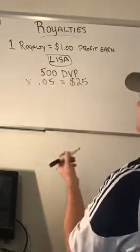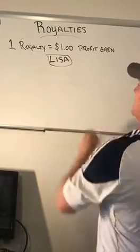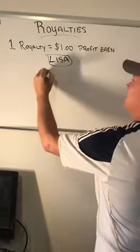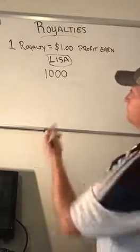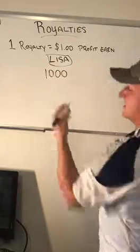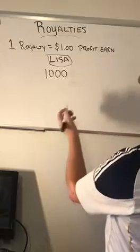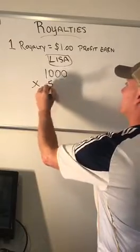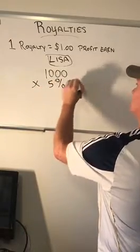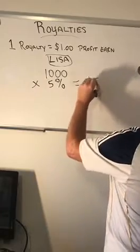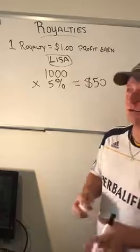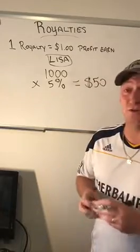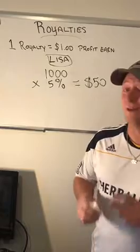Let's say the next month Lisa works even harder and gets 1,000 documented volume points. That 1,000 documented volume times 5% ends up being $50. It's very simple — I don't want you to get confused. Just know it's your documented organizational volume based off all your supervisors in your organization, three levels deep.